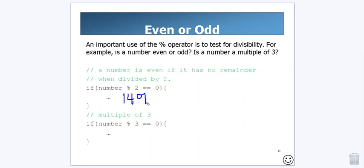So, like, if I say 14 mod 2, I'm going to get seven remainder zero, right? I'm going to get a remainder of zero. And we all know that 14 is even.